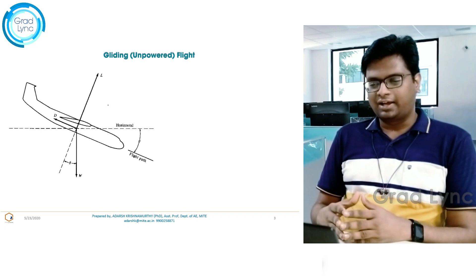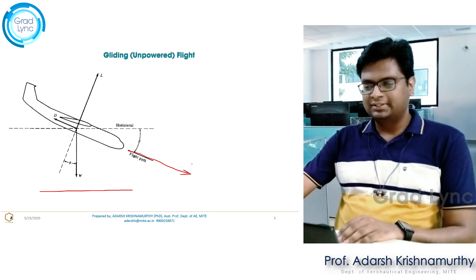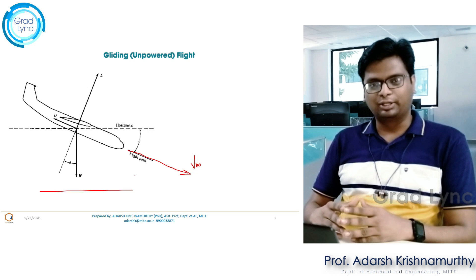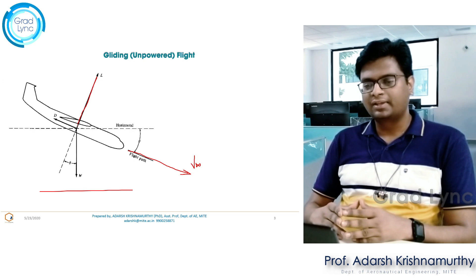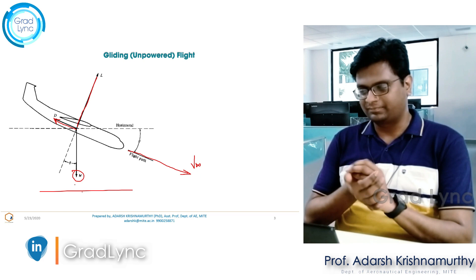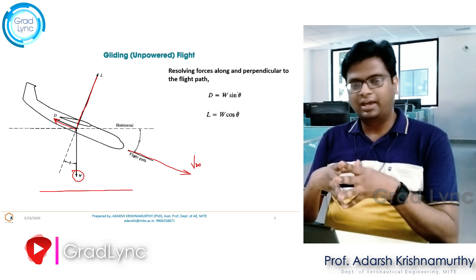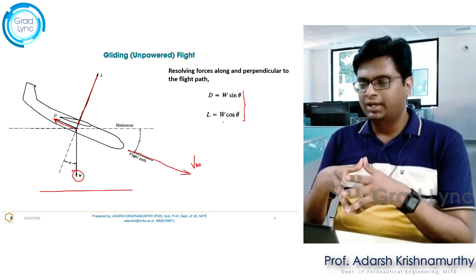Let's consider an aircraft in gliding mode, going downwards. This is the flight path. Lift is always perpendicular to the freestream velocity, which acts in the opposite direction of the flight path. Drag always acts opposite to the flight path. Weight acts towards the center of the earth. Resolving forces along and perpendicular to the flight path: drag equals W·sin θ and lift equals W·cos θ.